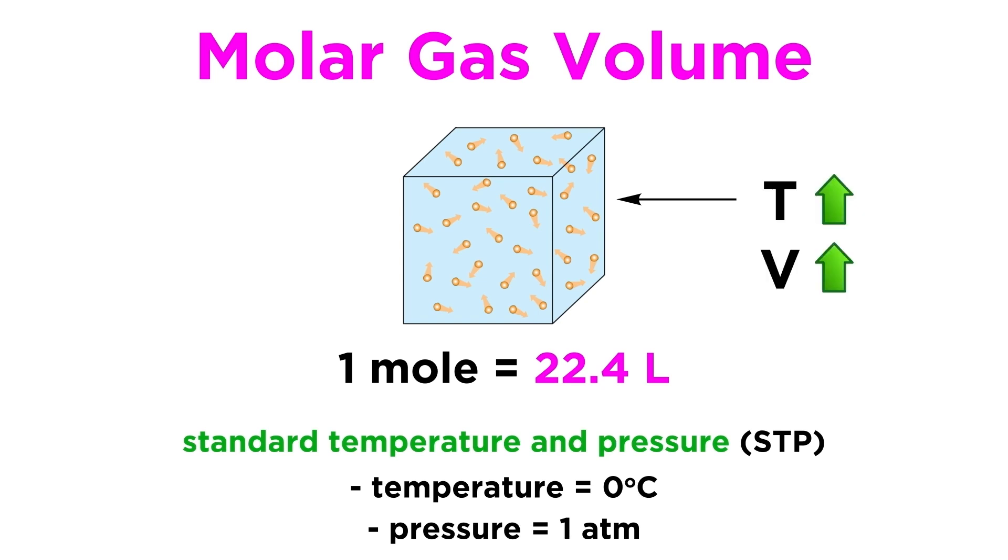At higher temperatures this value would be larger, and at lower temperatures this value would be smaller, as we know from Charles' law. If the exterior pressure were different, this would also have an effect on the volume, as we can assume based on Boyle's law, but the volume will typically be the same regardless of the identity of the gas.